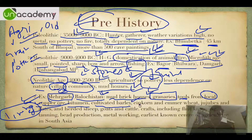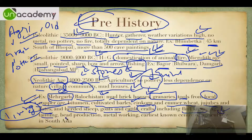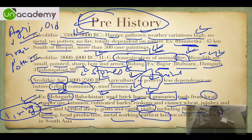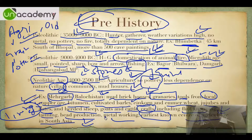At Mehargad, they cultivated barley, corn, and emmer wheat, and also developed jujubes and dates. They herded sheep, goats, and cattle. They developed crafts including flint knapping, tanning, bead production, and metalworking. Most importantly, Mehargad is the earliest known center of agriculture in South Asia — this is the key point to remember.